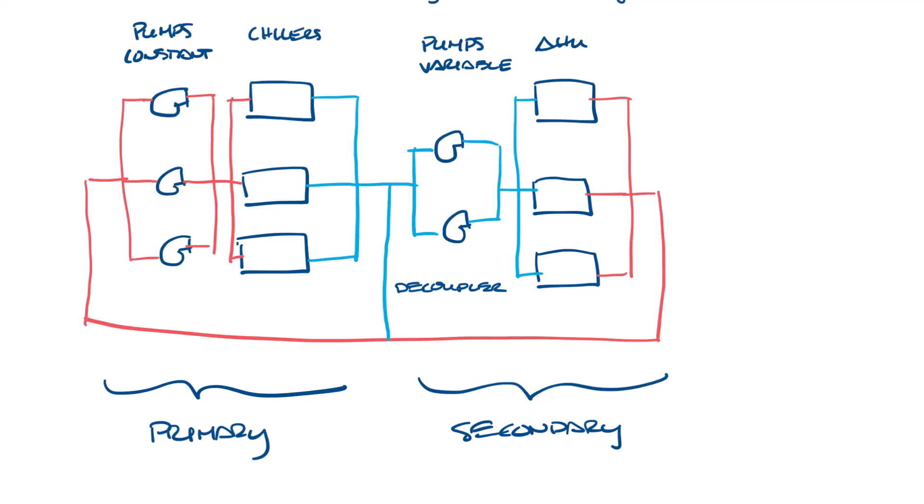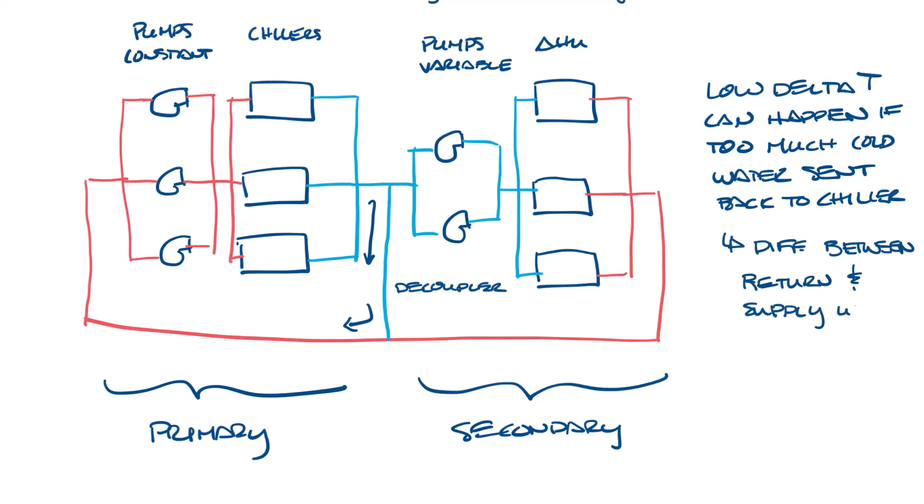When the secondary pumps are running slower than the primary, water will be diverted through the decoupler to balance the system. This can cause low delta T issues if too much cold water is sent back to the chillers. I'll cover low delta T syndrome in more detail in another video. But as the name implies, it's when the difference in the supply and return temperature is too low.